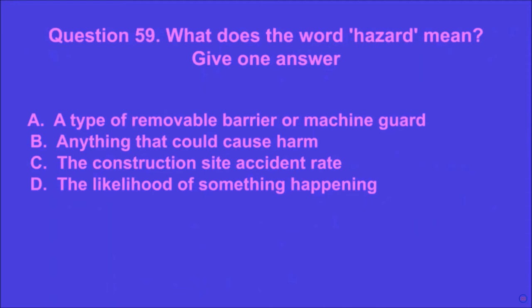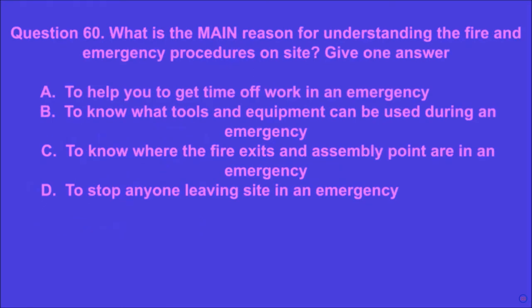Question 59: What does the word hazard mean? Give one answer. A: a type of removable barrier or machine guard, B: anything that could cause harm, C: the construction site accident rate, D: the likelihood of something happening. B is the correct answer.